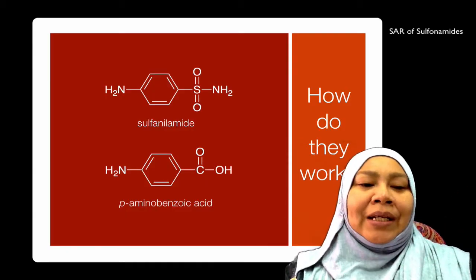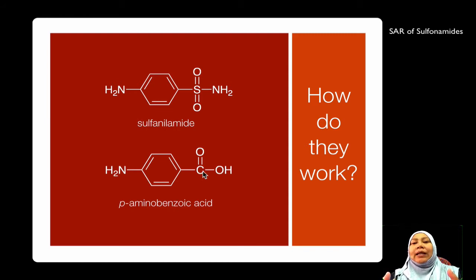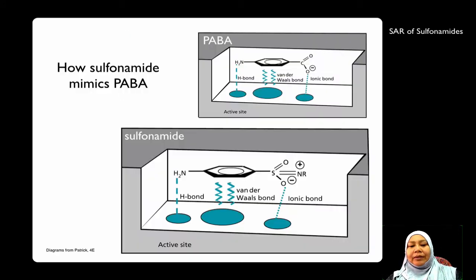When we talk about medicinal chemistry, we also talk about structures. Let's look at the structures of PABA and sulfonamide. If you can see, they are like twins — except in PABA, there's a carbon, whereas in sulfonamide, that carbon is replaced by a sulfur with an additional sulfonyl group. And instead of the OH in PABA, it's replaced with an NH2.